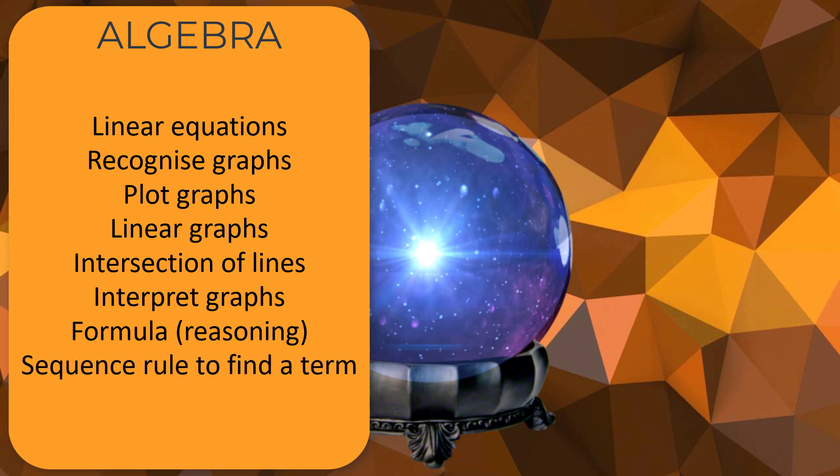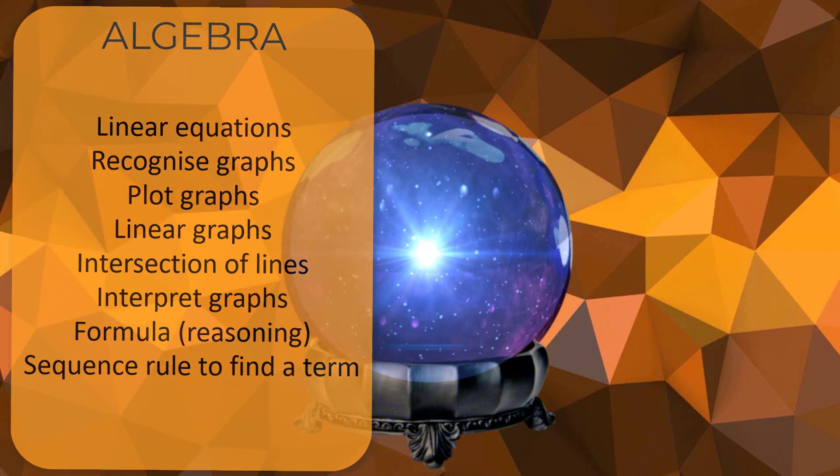And sequence rule to find a term. With these questions you've been given a specific way of generating a term of a sequence and you'll have to go away and do it. So whatever it says - it might say take the last term and double it and take away three or something like that - you just have to follow the rule until you've got as many terms as they're asking you to find.